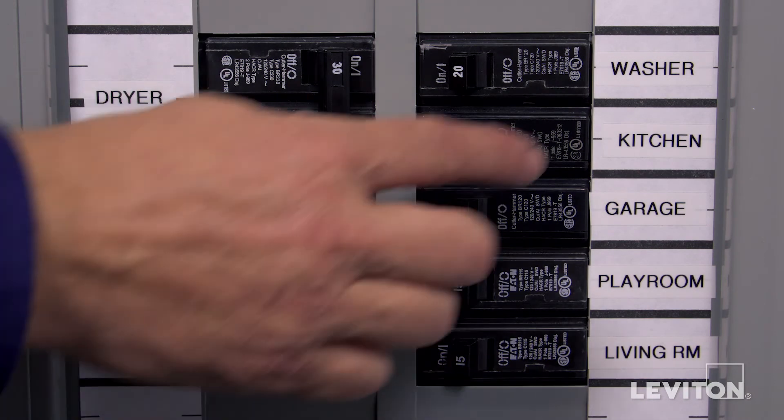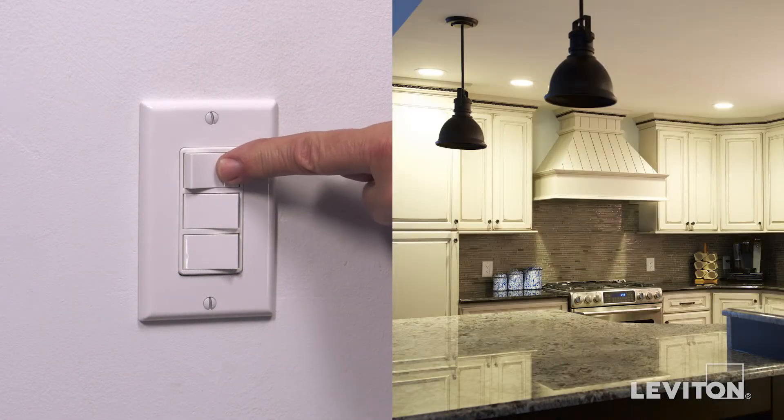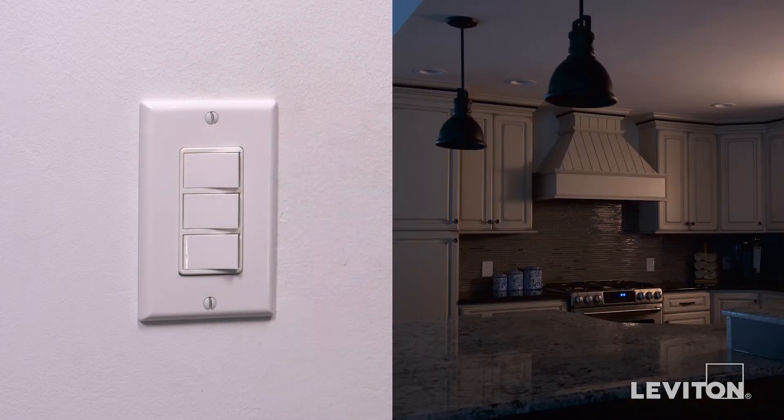Restore power at the circuit breaker. Test the installation by operating the top switch several times. The lights should turn on and off.